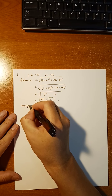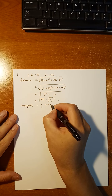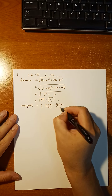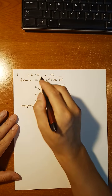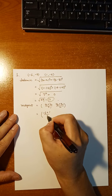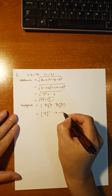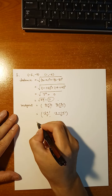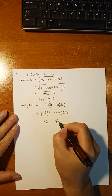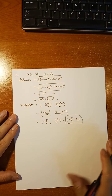And the midpoint: midpoint is (x1 plus x2) over 2 for the x-coordinate, and (y1 plus y2) over 2 for the y-coordinate. x1 is negative 6, x2 is 1, over 2. y1 is negative 3, y2 is negative 3, over 2. So it's negative 5 over 2, and negative 6 over 2 is negative 3. So the midpoint is (negative 5 over 2, negative 3).